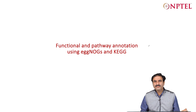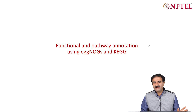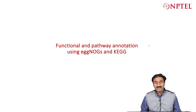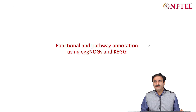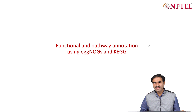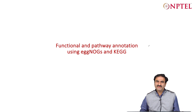Welcome to the second part of the lecture. In the first part we looked at annotating, finding, and predicting various non-coding RNAs, including tRNA, mRNA, ribosomal RNA, and micro RNA. In the second part, we will look at how to annotate the proteins that we have already predicted using EggNOG and KEGG, and what metabolic pathways are and how functional annotation by EggNOG and KEGG can be useful to understand the function of a protein.